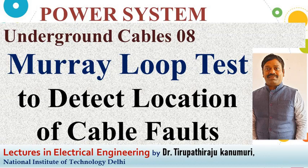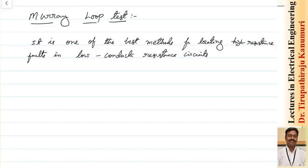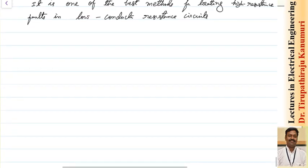Today we are going to see the Murray loop test for finding the short circuit and earth faults of a cable. It is one of the best methods for locating high resistance faults in low conductor resistance circuits. The only limitation of this method is you should have at least one conductor which is a sound conductor — a conductor without fault — having the same length as your faulty cable.